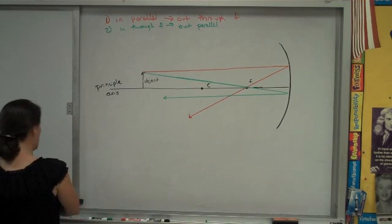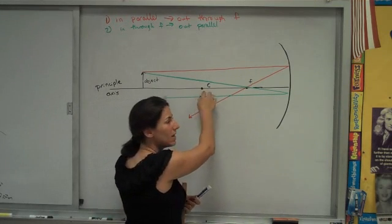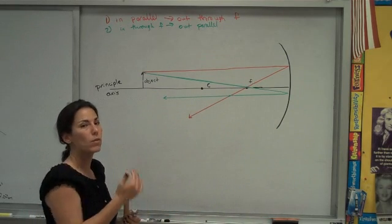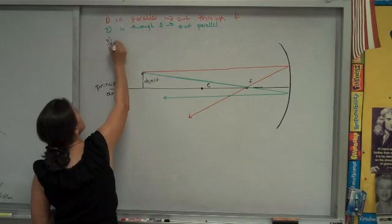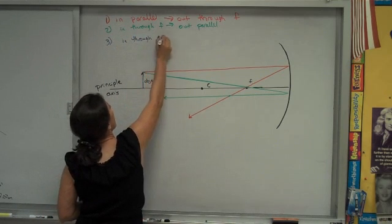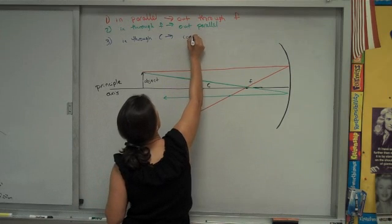And that third confirmation rule says that any light that passes through c is going to hit along the normal line and thus come right back along the normal line. In other words, it's going to come back through c. So rule number three says light that comes in through c, after it hits the mirror, bounces back right out through c. It comes back along the same line.